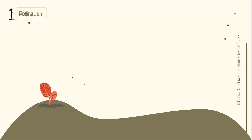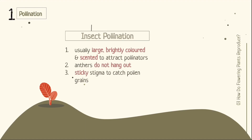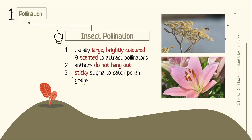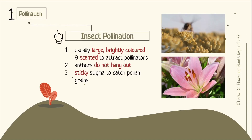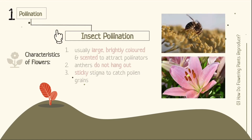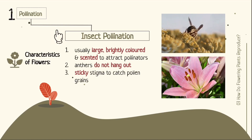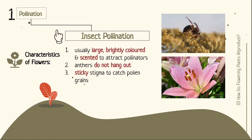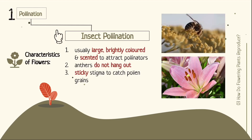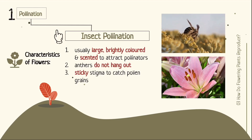Plants that go through insect pollination have flowers that are usually large, brightly coloured, and scented to attract pollinators. Their anthers do not hang out of the flower, and the flowers have sticky stigma that catch pollen grains.